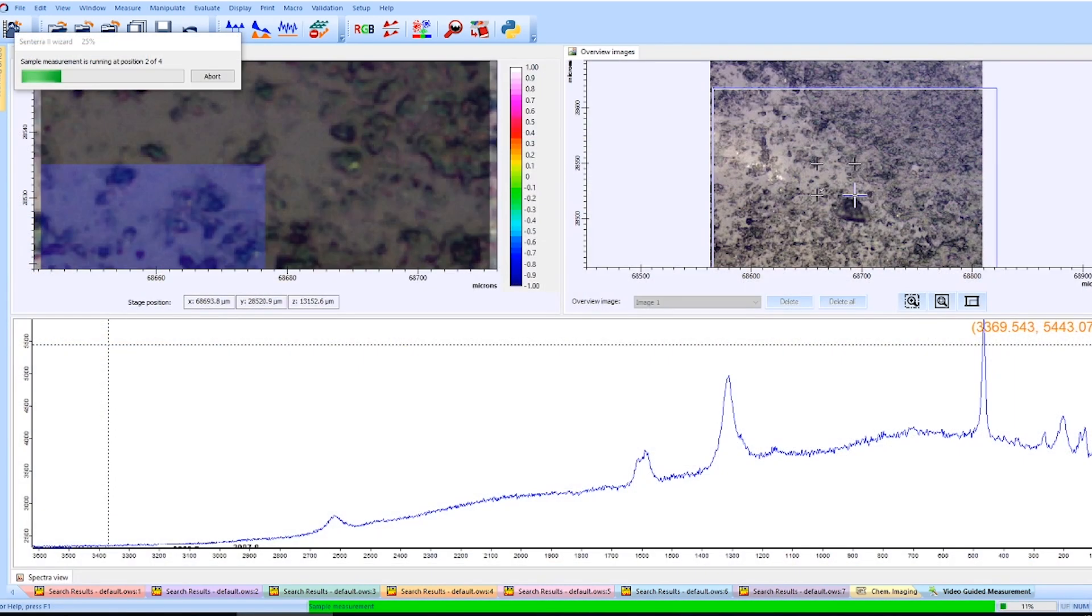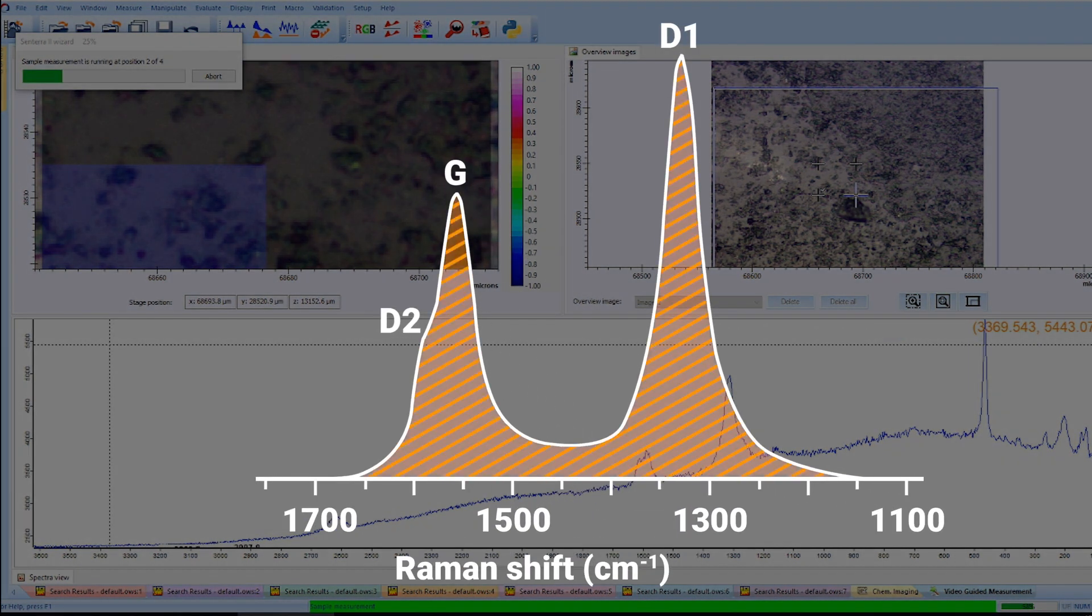Following this, we carry out a measurement after which the OPUS software determines the area ratio of the D and G bands of the carbon, which is temperature sensitive.